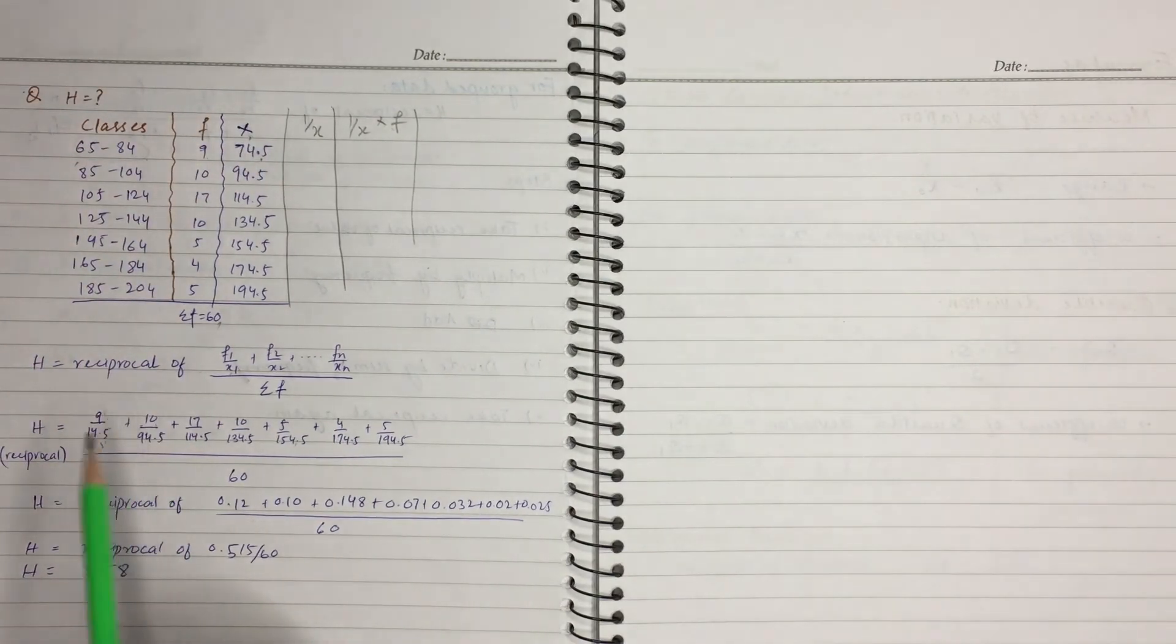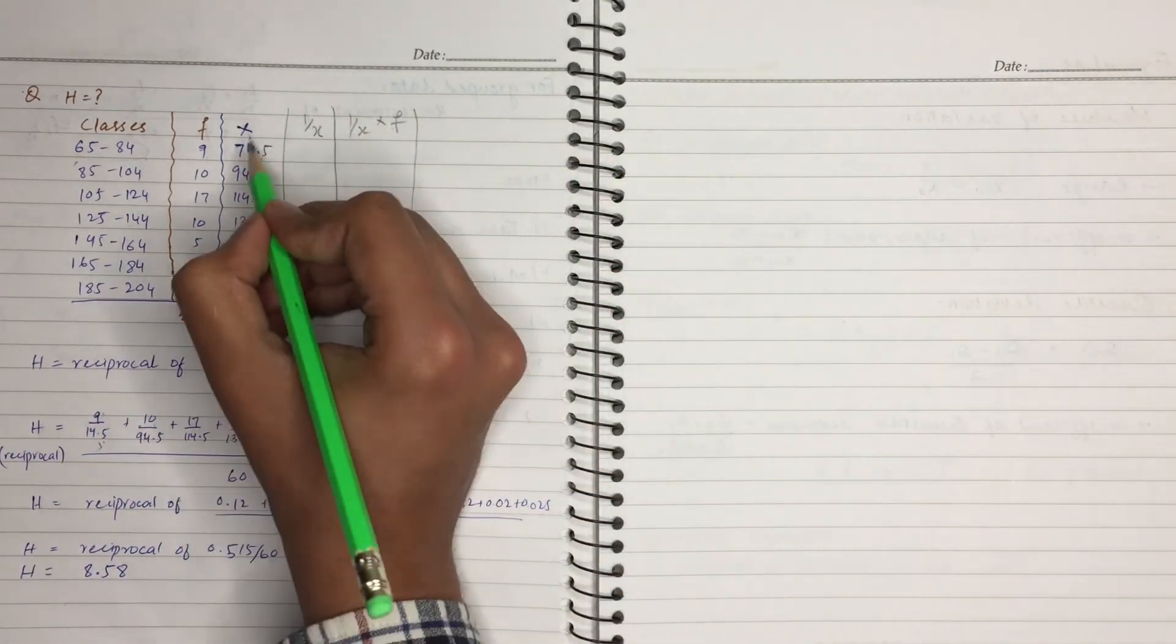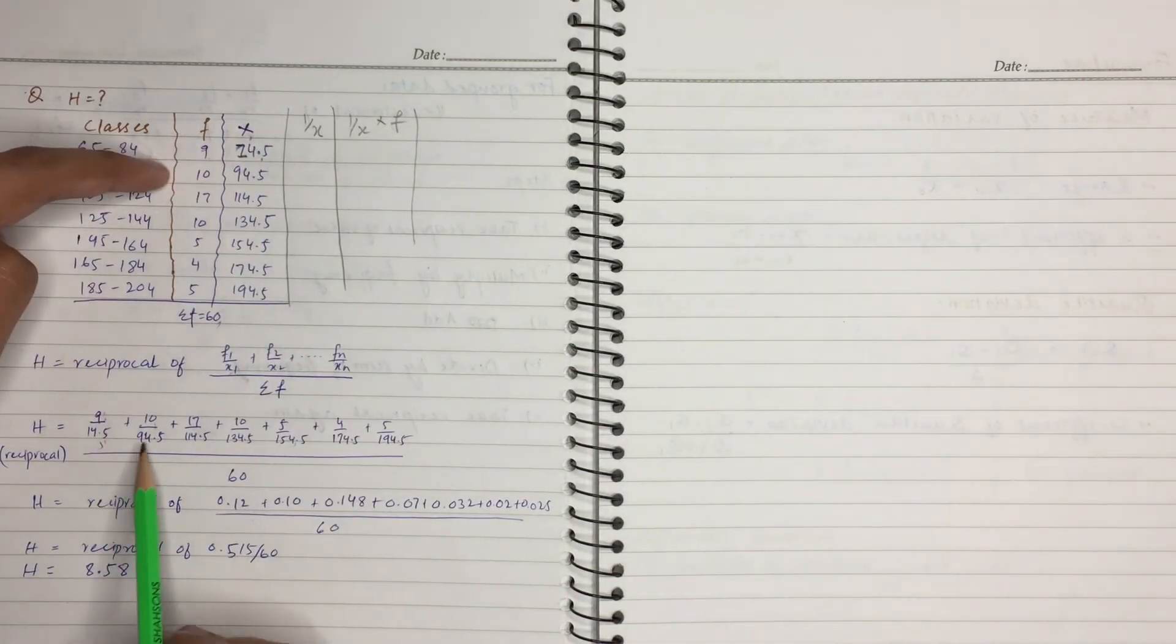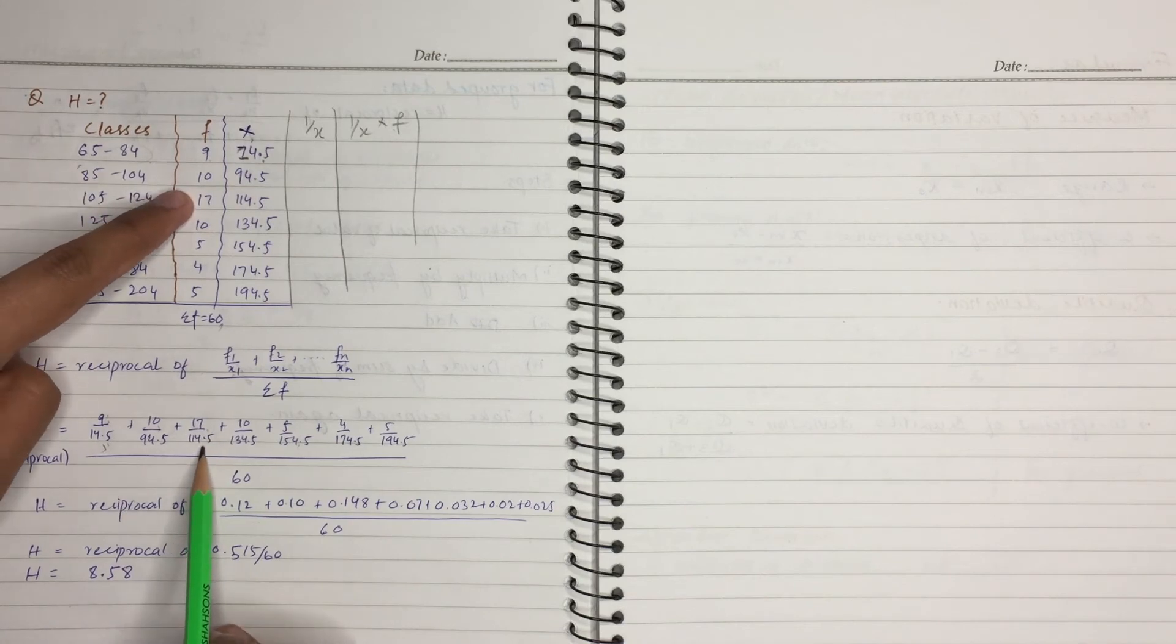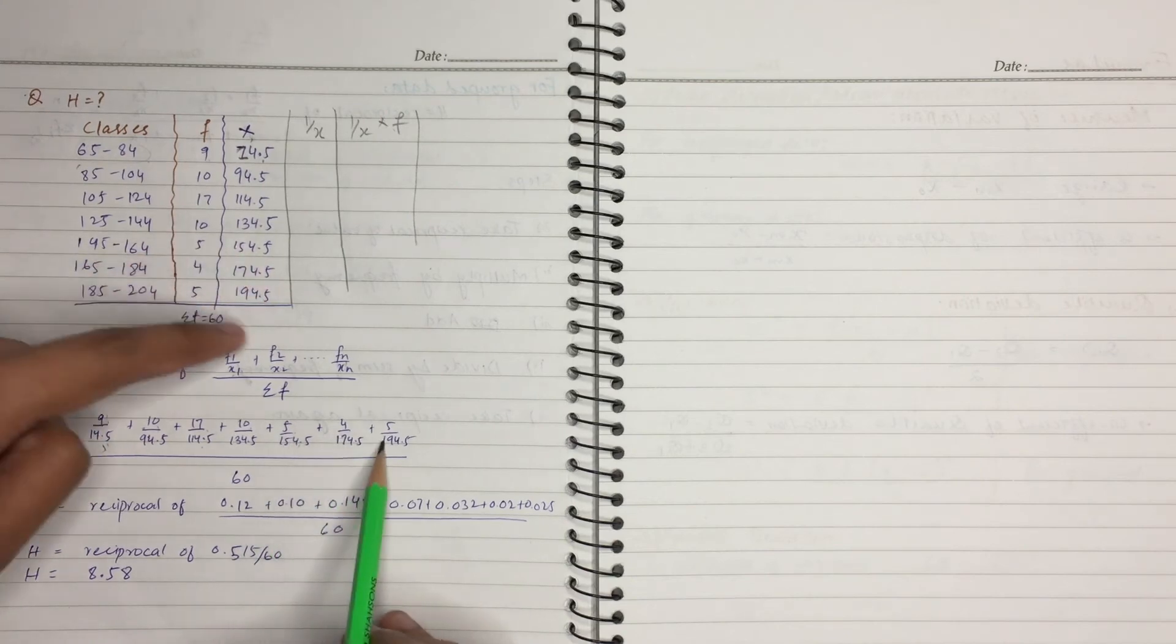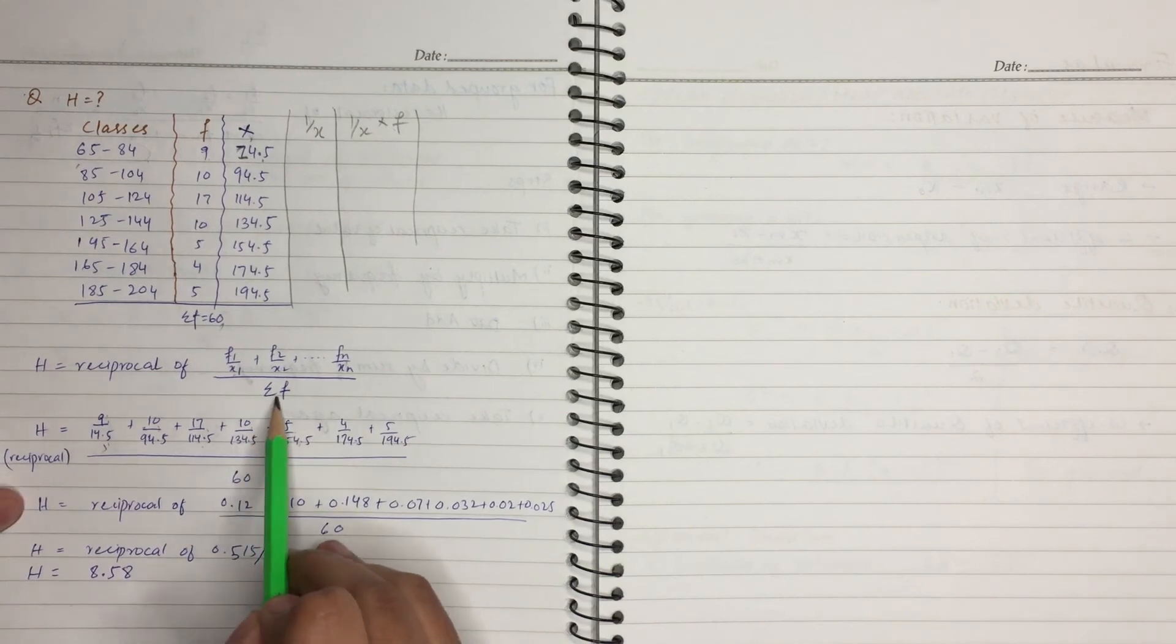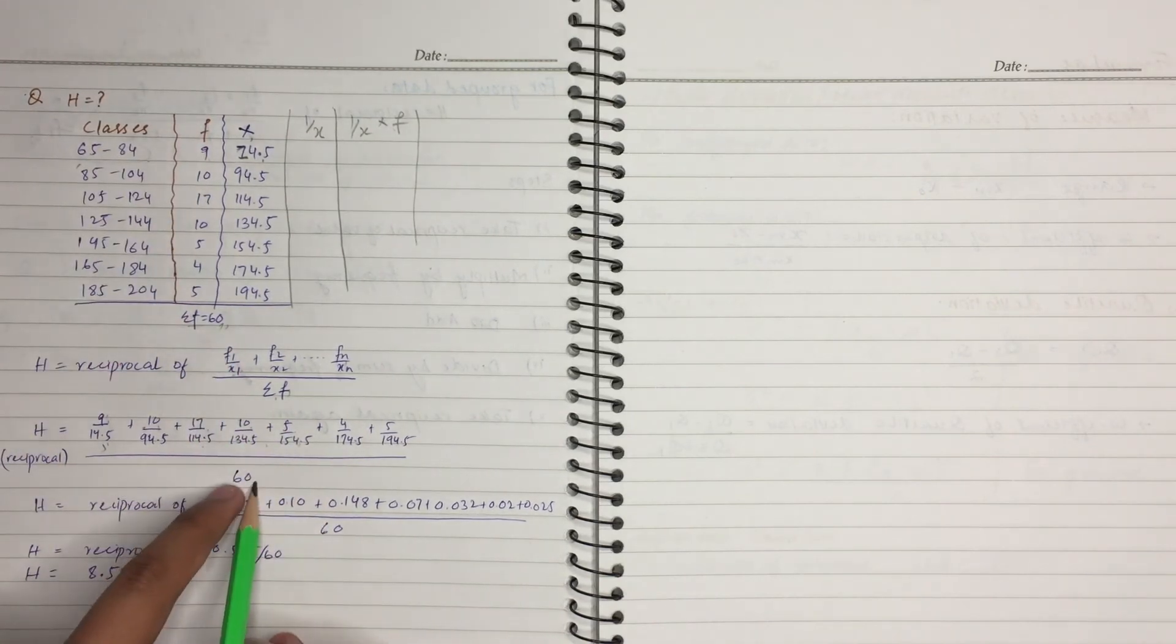10 by 94.5, 17 by 114.5, 10 by 134.5, 5 by 154.5, all frequency divide midpoint. And we have sum of frequency.